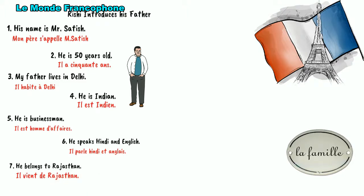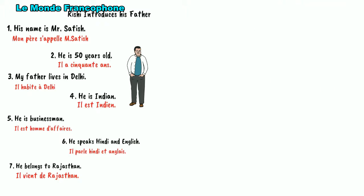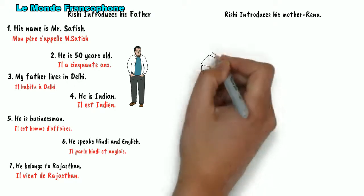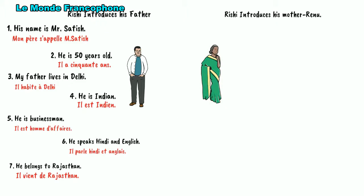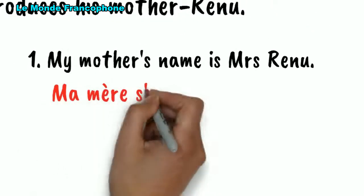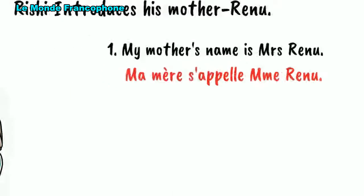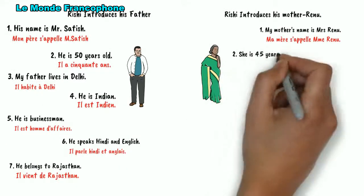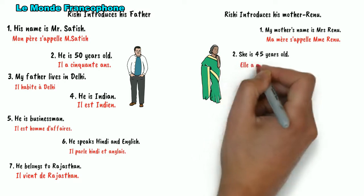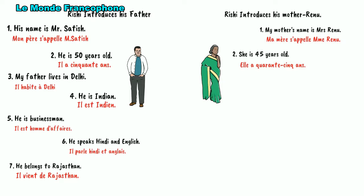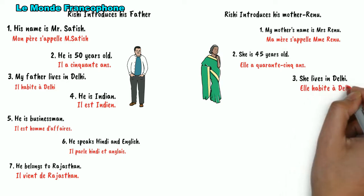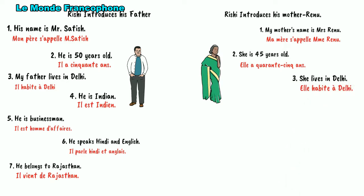So these are the sentences to introduce his father. Similarly, he can introduce his mother to us. For mother, he would say: Ma mère s'appelle Madame Renu. Then he can talk about her age — my mother's age is 45 years. So in French: Elle a quarante-cinq ans. The third sentence is her place of residence — my mother lives in Delhi: Elle habite à Delhi. Then, my mother is Indian: Ma mère est indienne.